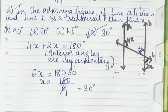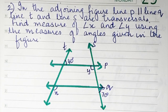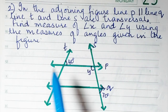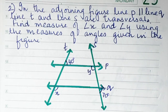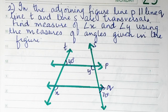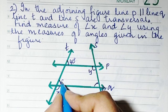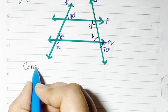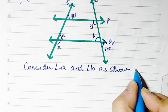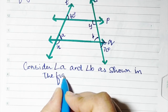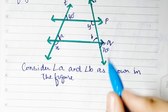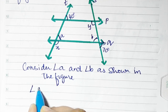Now let's do sum number 2. In this sum, line p is parallel to line q and lines t and s are the transversals. We have to find the measure of angle x and angle y using the measures given in the figure — 40 and 70. We'll label angles a and b to make it easier to solve. This angle is 40, so angle a will be 40 because they are corresponding angles.